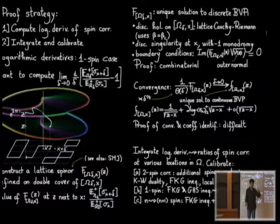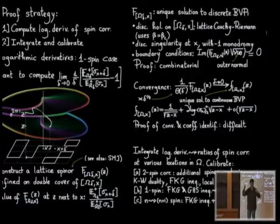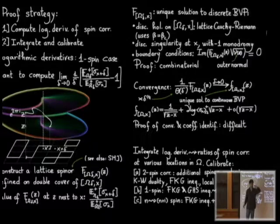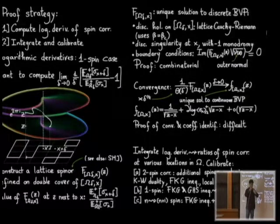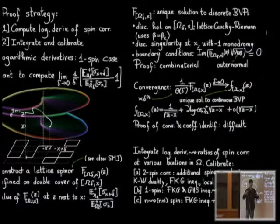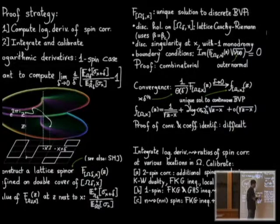The overall strategy is: on the lattice level, construct a function such that when evaluated at the right point it gives the desired information; prove this function is a solution to a discrete boundary value problem (using integrability); prove this solution converges to a continuous solution; look at the expansion of the continuous solution and relate it to the desired value; obtain the limit; and then integrate and calibrate the results using probabilistic techniques, relating everything to diagonal spin-spin correlations in the full plane.